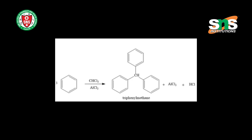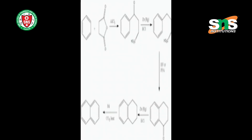The next reaction is the oxidation of tri-phenyl methane. Tri-phenyl methane undergoes auto-oxidation because the tri-phenyl methane radical generated during the reaction is very stable, making it susceptible to auto-oxidation. On oxidation, it gives tri-phenyl methane hydroperoxide.